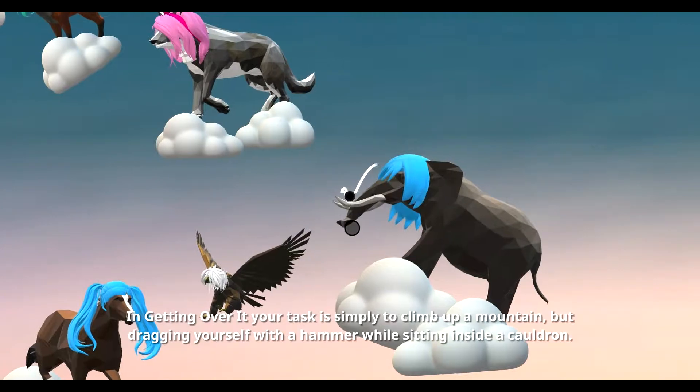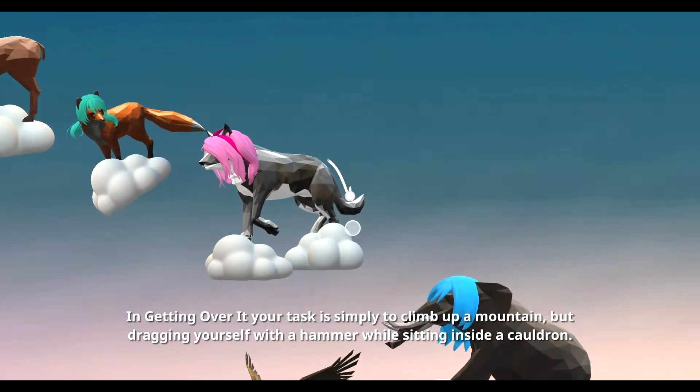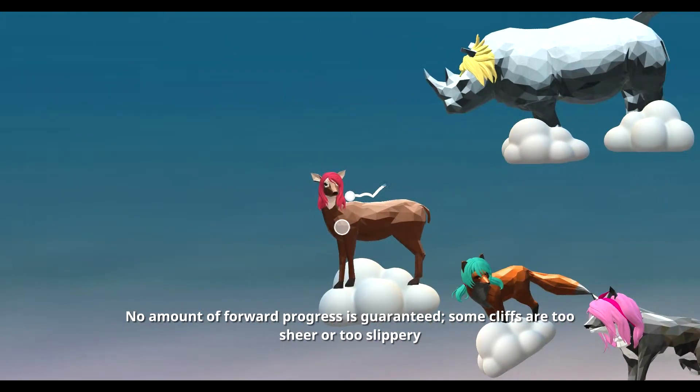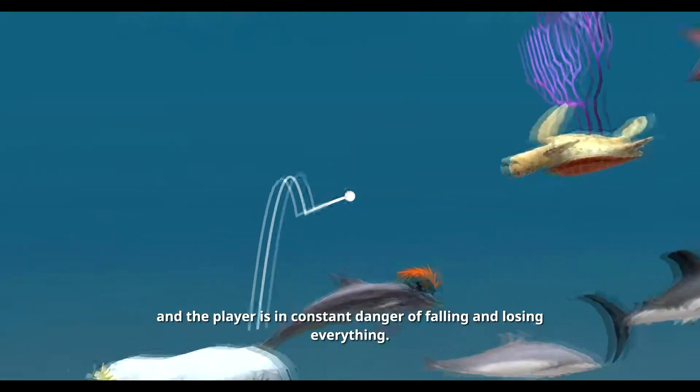In Getting Over It, your task is simply to climb up a mountain by dragging yourself with a hammer while sitting inside a cauldron. No amount of forward progress is warranted, some cliffs are too sheer or too slippery, and the player is in constant danger of falling and losing everything.